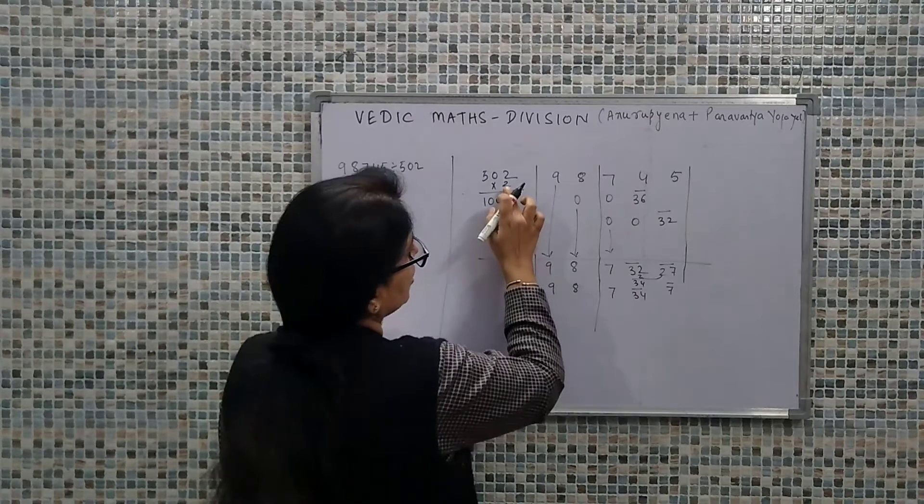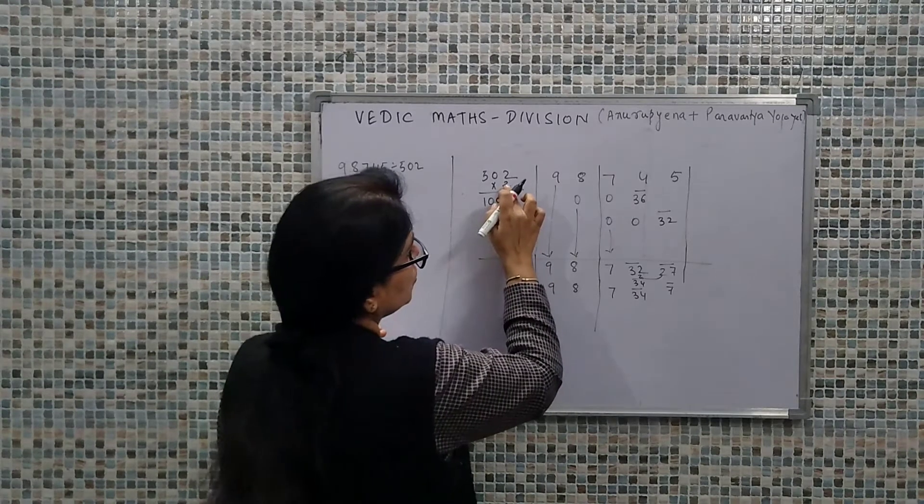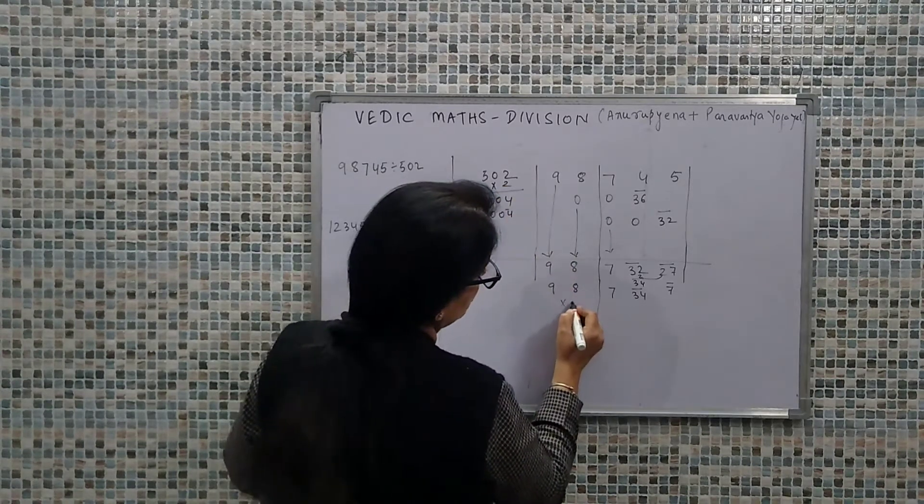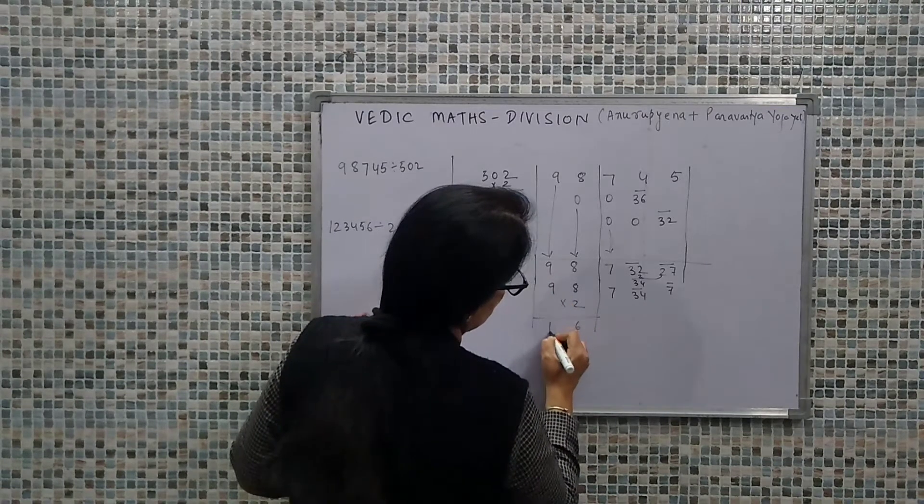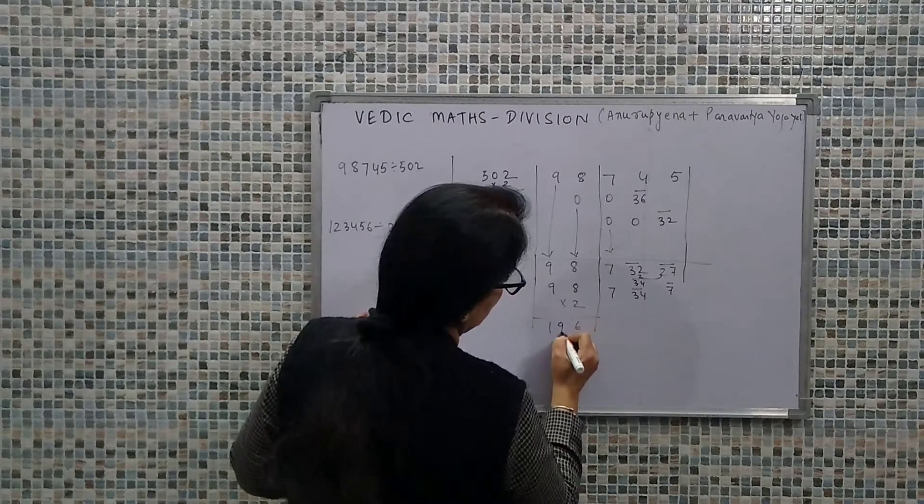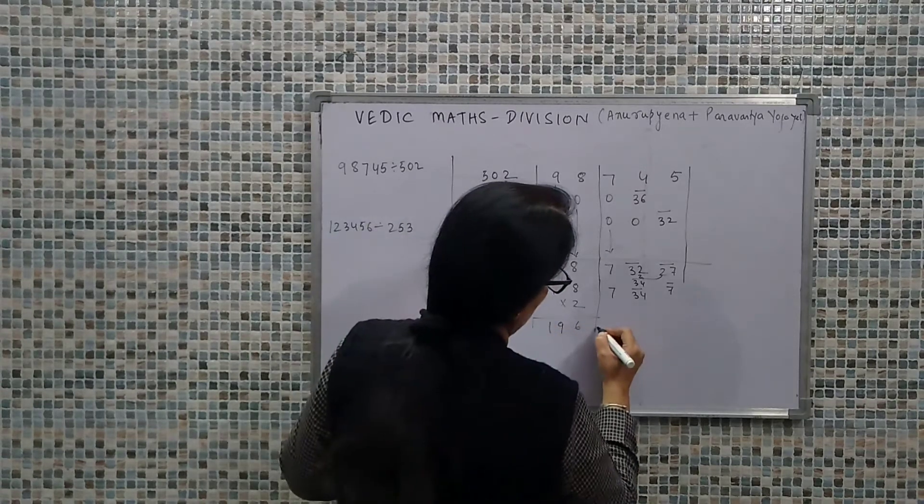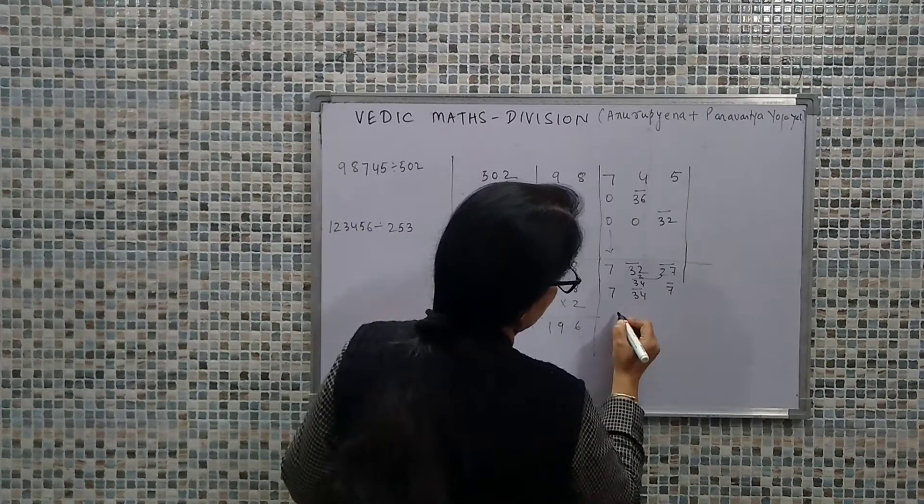Now we use the proportionality concept that we used here. In our quotient, we multiply by 2. So that is 196. This is our quotient. We will further simplify our remainder.